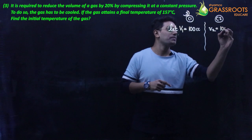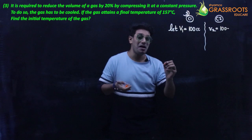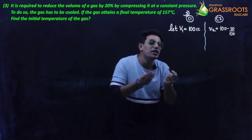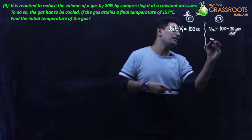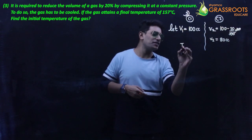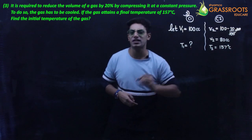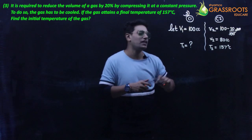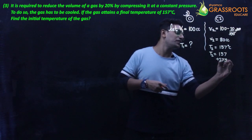It is reduced by 20%, so it was 100 minus 20% of 100, which gives V2 = 80 cc. Find the initial temperature if the final temperature is 157°C — but since degree Celsius is given, you must immediately convert to Kelvin: 157 + 273 Kelvin.